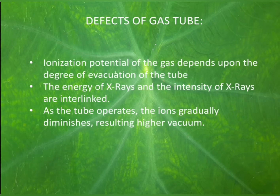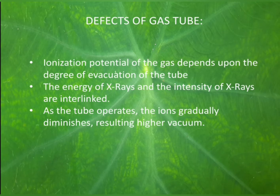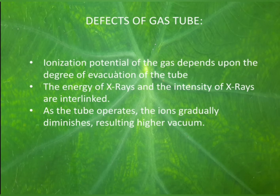The second disadvantage is that the energy and intensity of x-rays are always interlinked. To increase the penetrating power, we have to increase the evacuation of the glass and also apply high voltage, meaning we have to continuously use a vacuum pump to operate this x-ray tube. A constant amount of gas must be maintained inside the gas tube, and proper evacuation has to be maintained. For this purpose, the tube is supplied with a vacuum pump, thus requiring more skill to operate.